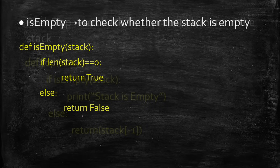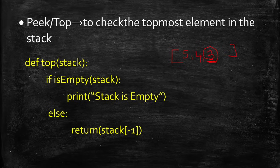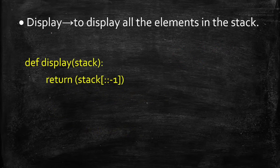For peek or top — to retrieve the topmost element — consider a list with elements 5, 4, 3. The topmost element is at index -1. So: def peek(stack): if not isEmpty(stack): return stack[-1]. Using index -1 gives the topmost element of the stack.